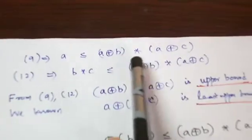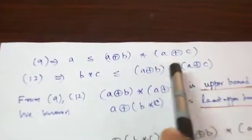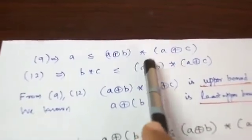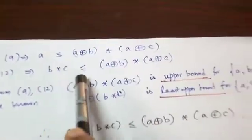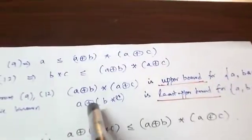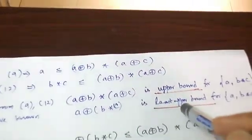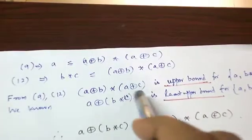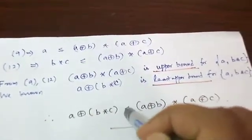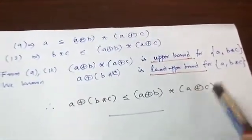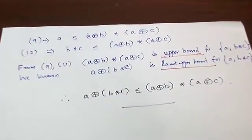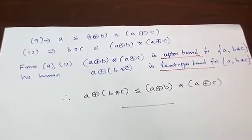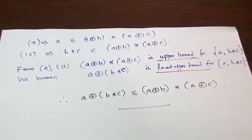Combining inequalities 9 and 12, we can say (A+B)★(A+C) is an upper bound for A and B★C. And A+(B★C) is the least upper bound. Comparing, A+(B★C) is less than or equal to (A+B)★(A+C). This is the second distributive inequality. With this, the problem is over. Let us see another theorem or problem in the next video. Thank you.